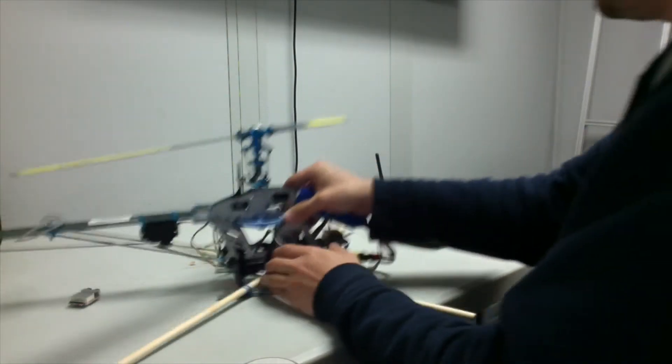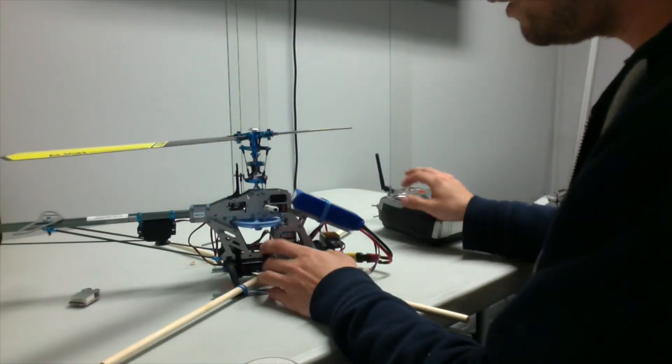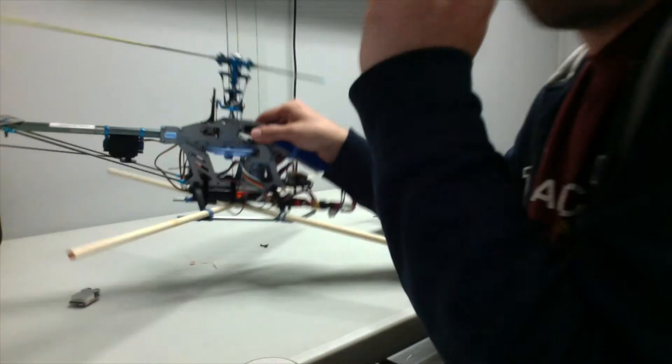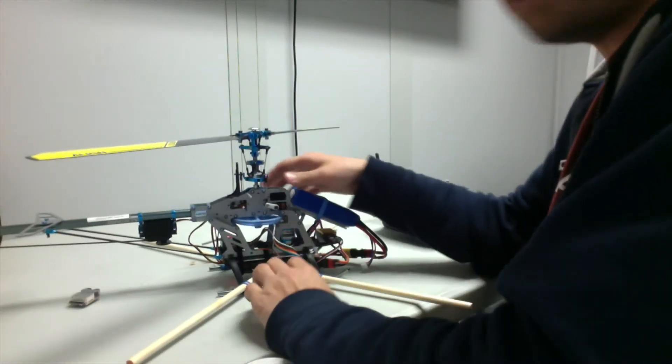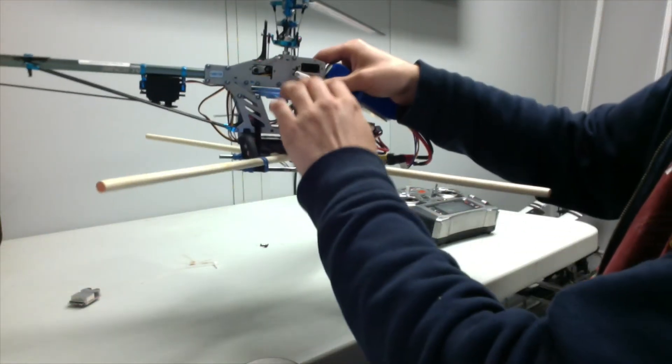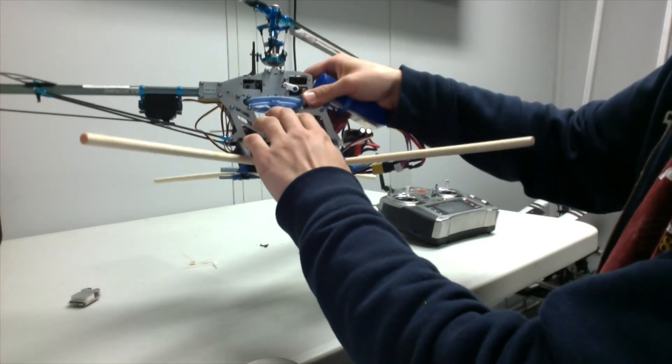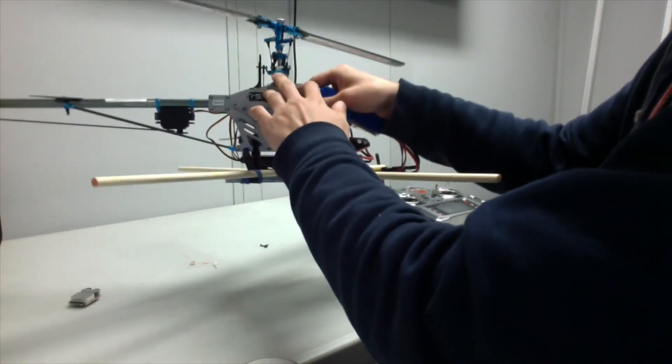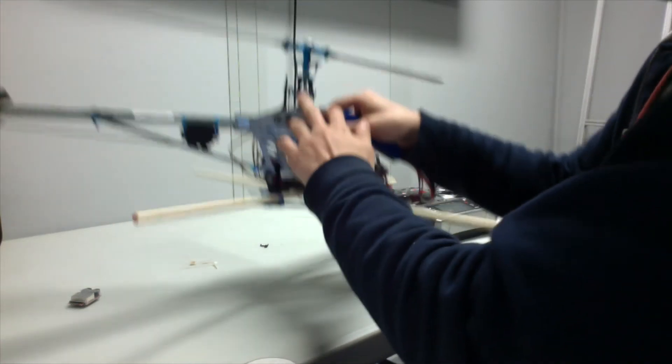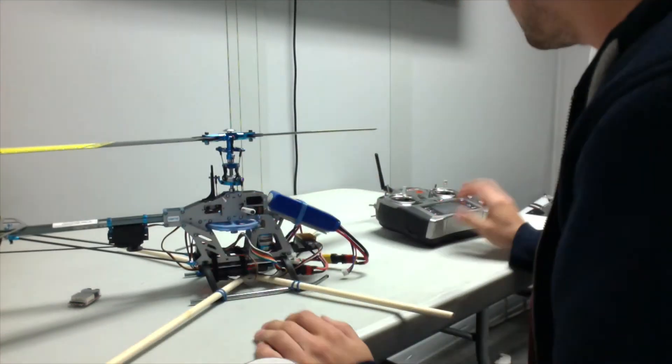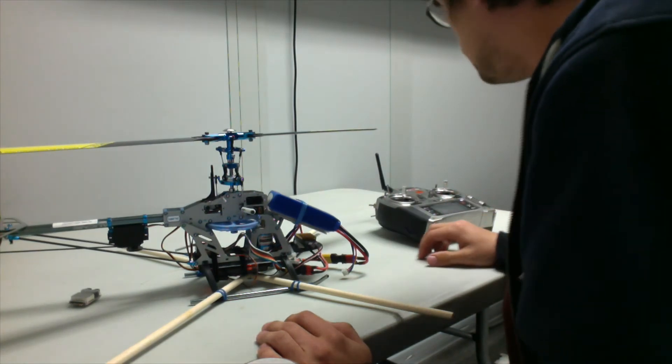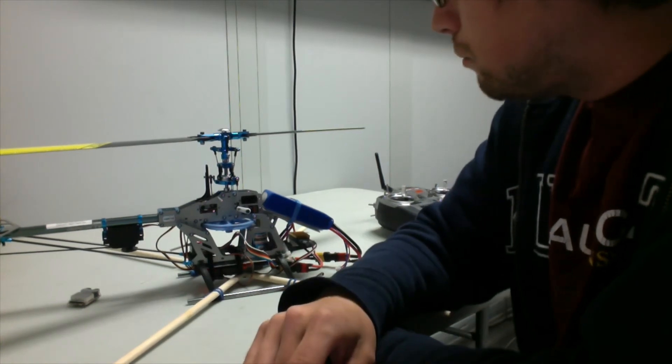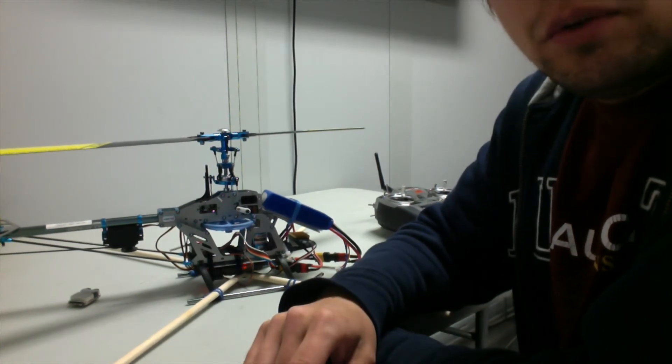Do the same with your swash plate. Tilt it. If you're in acro mode, which you should be for all this initial testing, as the vehicle rotates one way, the swash plate should try to fight the motion. Make sure that none of those are reversed. Because if any of those are reversed, we can get some bad oscillations and we will most likely crash. If all that checks out, we are ready to do some flight testing.